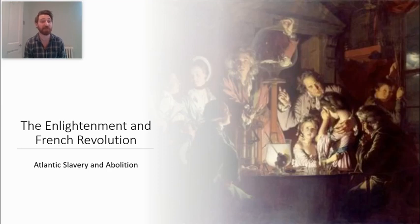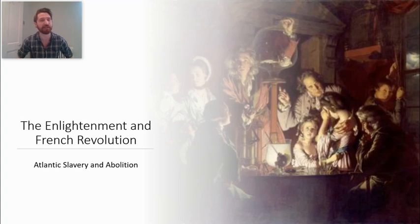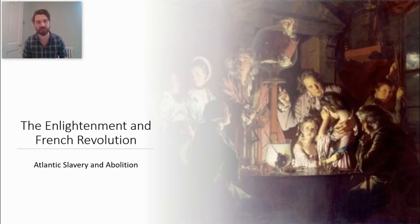Hello and welcome to week six of the Atlantic Abolition and Slavery module. This week we will be talking about the importance of the Enlightenment and the French Revolution in transforming the Atlantic world. We're going to be building on the slave narratives we discussed last week and place them within the important philosophical and social context in which they were taking place. As we saw through the three phases of slave narratives, slaves' lives changed drastically and the role of the Enlightenment is crucial in understanding that process.